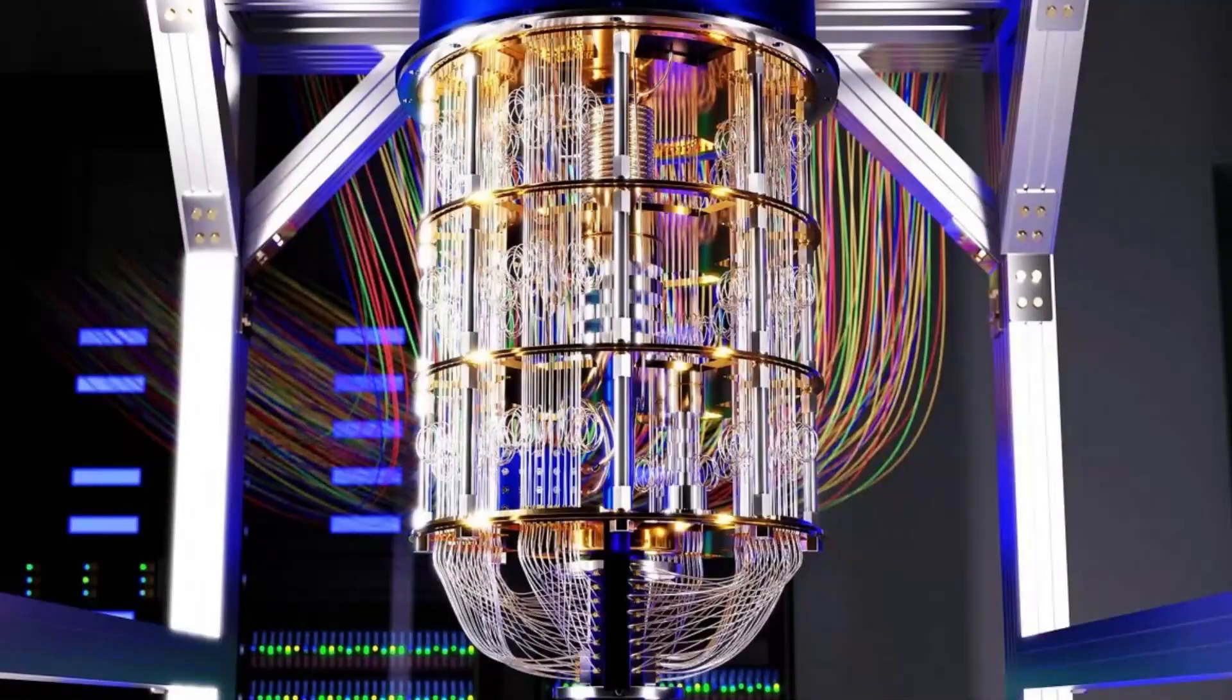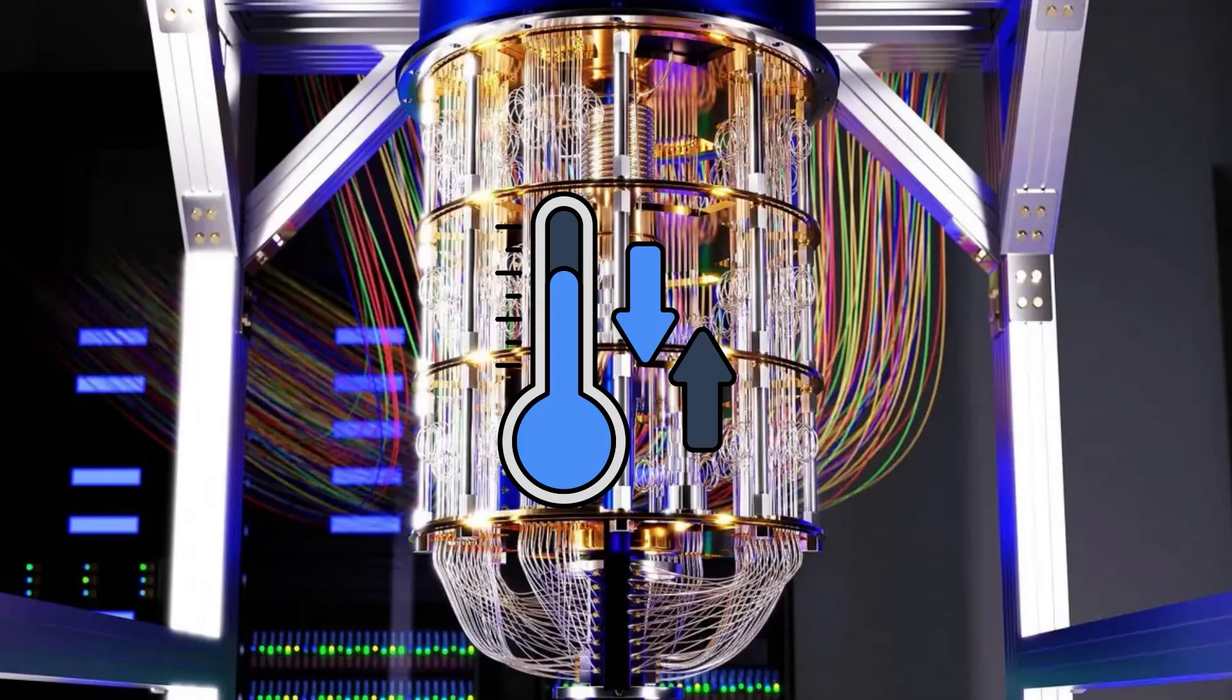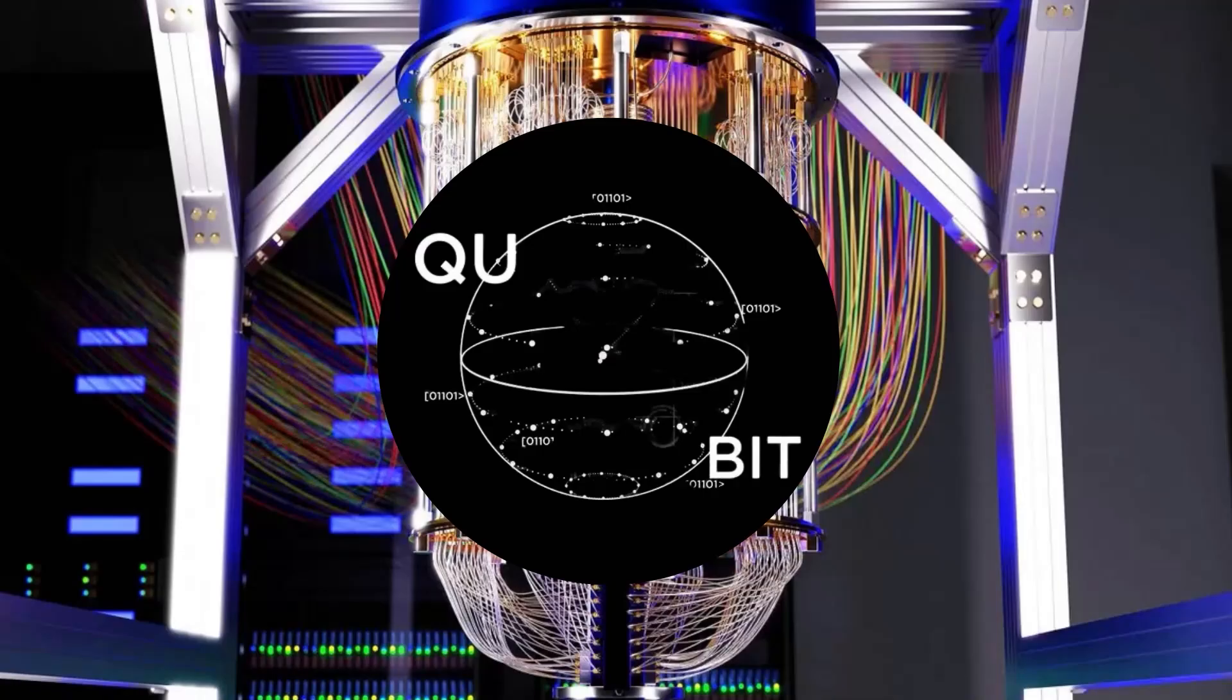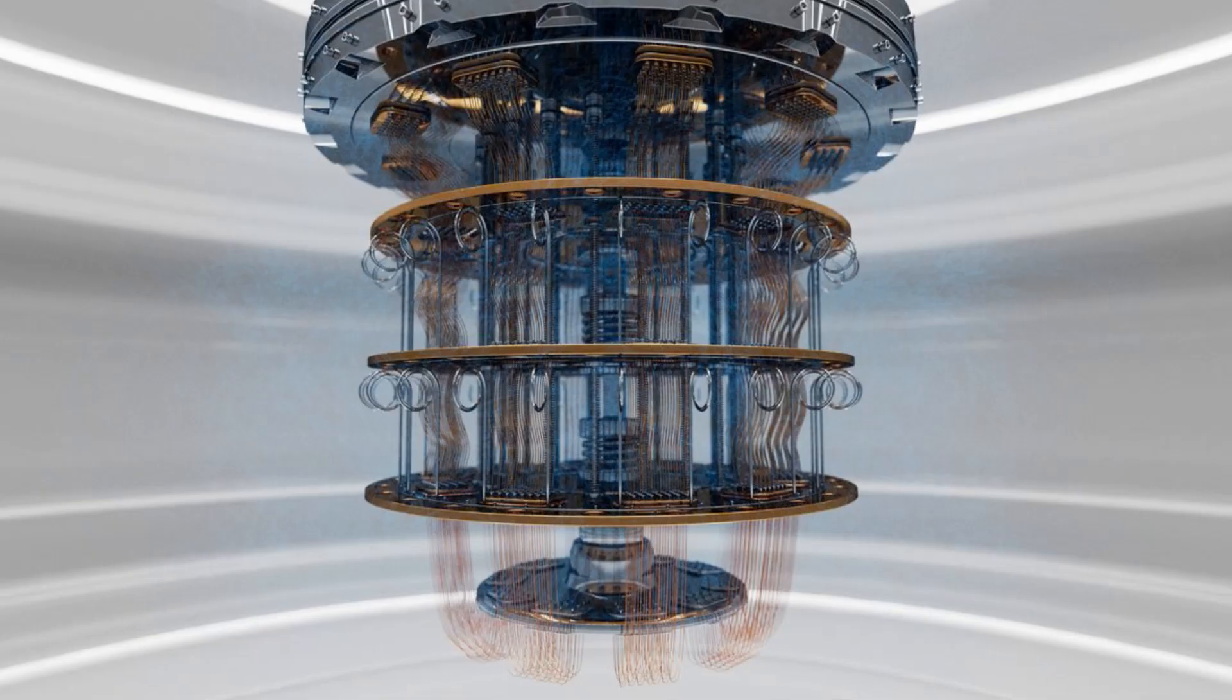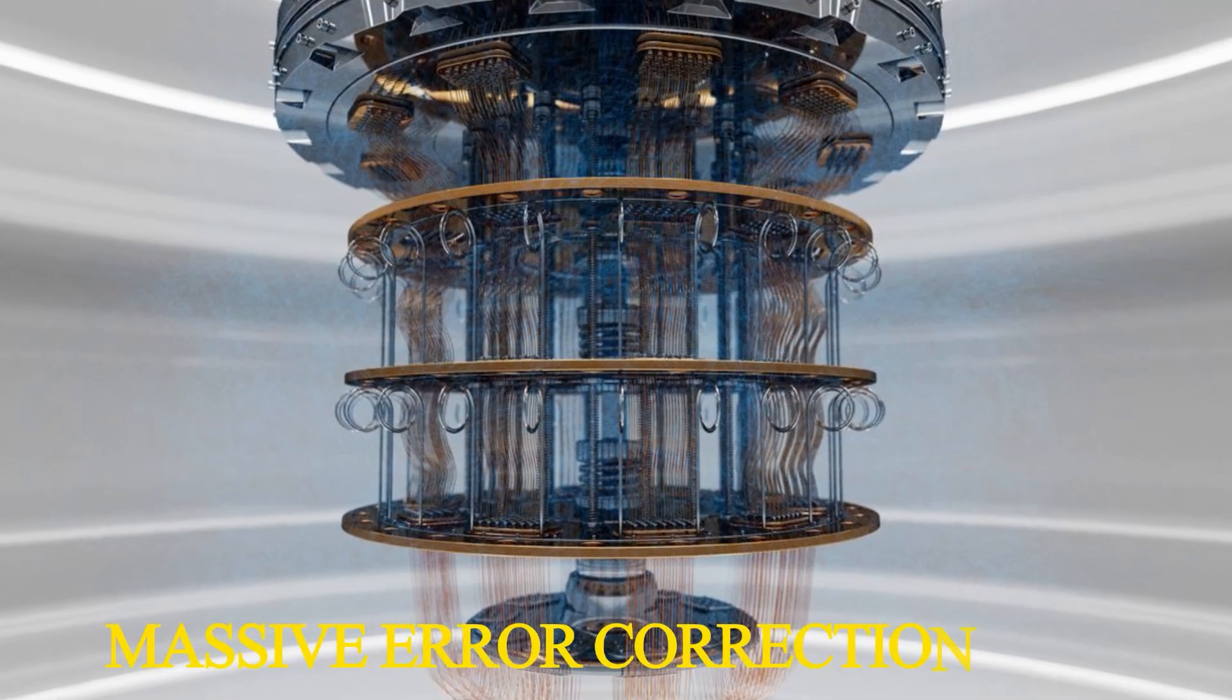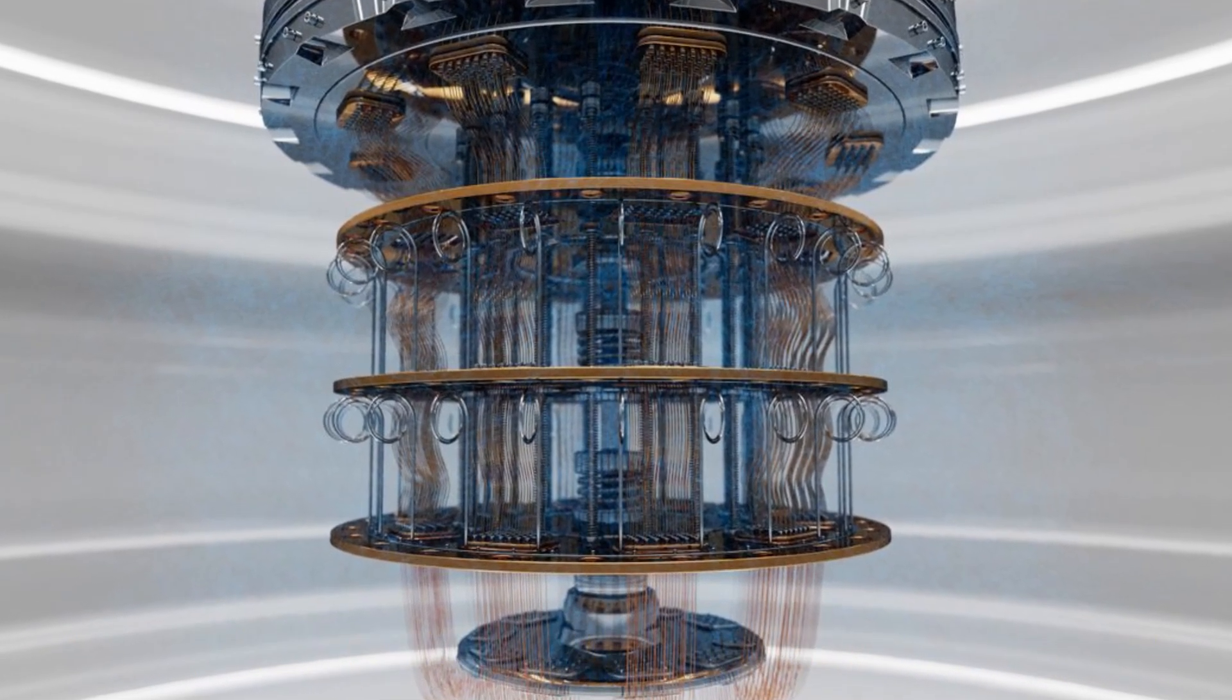And it gets worse. Even tiny disturbances, a stray photon, a slight temperature fluctuation, or even atomic-level vibrations, can force qubits to collapse before calculations are finished. This phenomenon, called decoherence, is why today's quantum computers need massive error correction systems just to function.